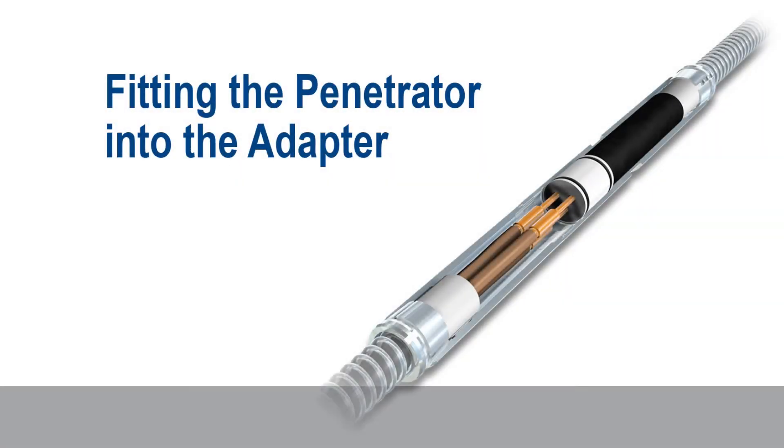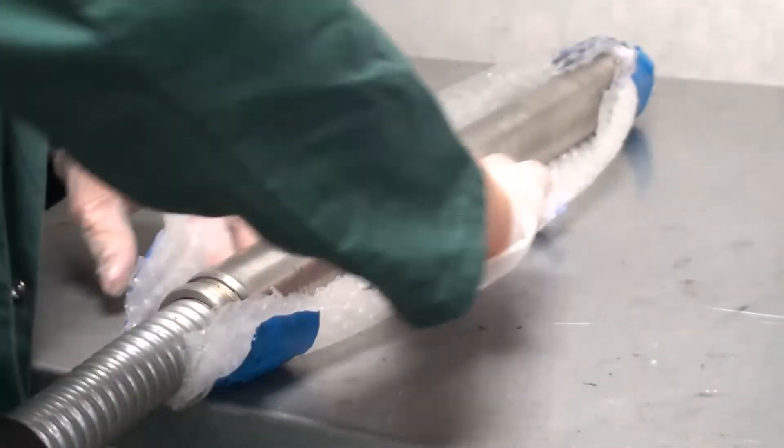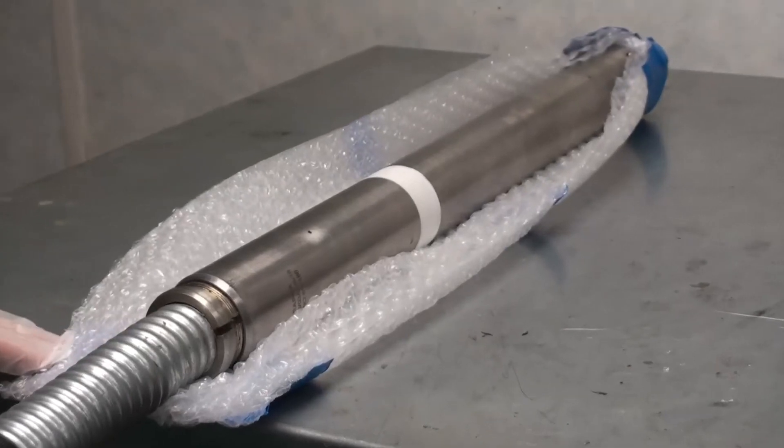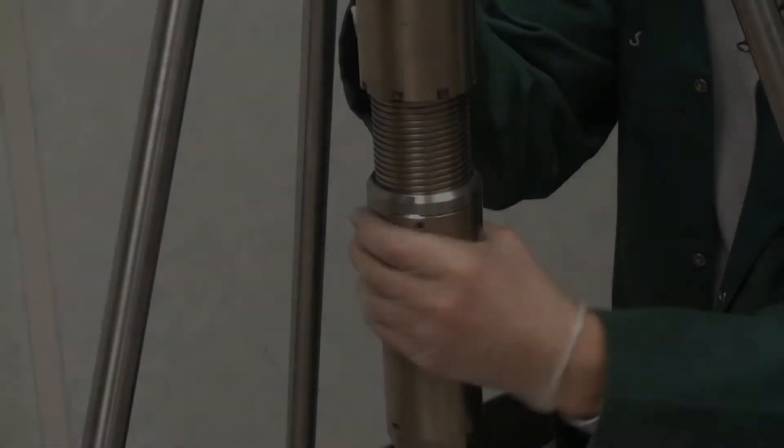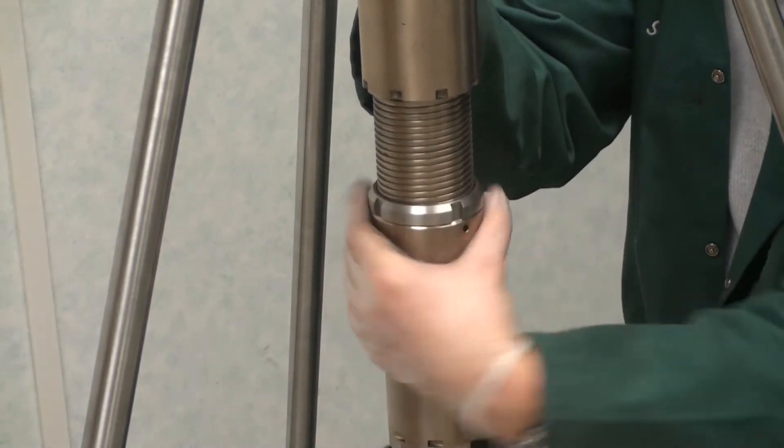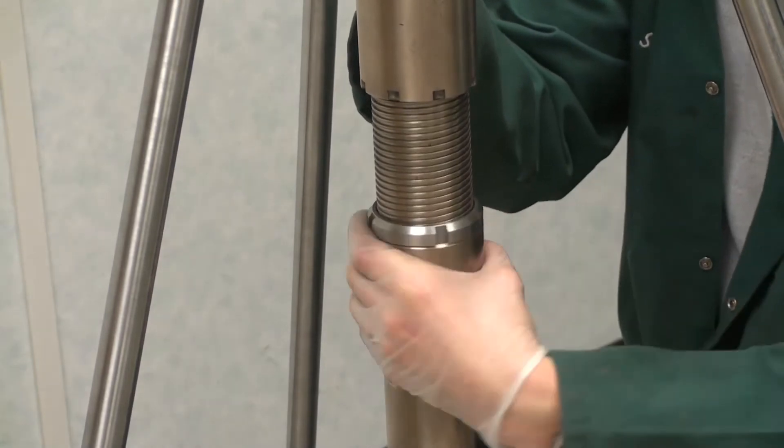Fitting the penetrator into the adapter. Please note that the packaging on the penetrator should only be removed when it is ready to be fed through the adapter bore. This is to protect the vital sealing surfaces from damage. In the case of an adjustable adapter, this should be set to the mid-stroke position prior to fitting the penetrator.